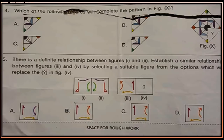Question 5: There is a definite relationship between figures 1 and 2. Establish a similar relationship between figures 3 and 4 by selecting a suitable figure from the options, which will replace the question mark in figure 4. Look at figures 1 and 2 and determine which figure from options A, B, C, D will replace the question mark.